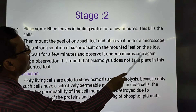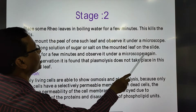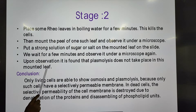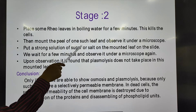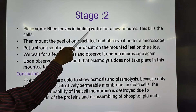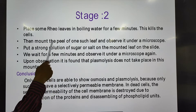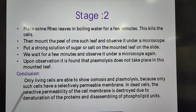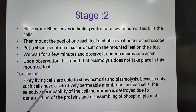We wait for a few minutes and observe under the microscope again. This time it is found that plasmolysis does not take place. In stage one we saw plasmolysis, but in stage two — because we boiled the reel leaf, killing the cells — we are not able to see the process of plasmolysis.